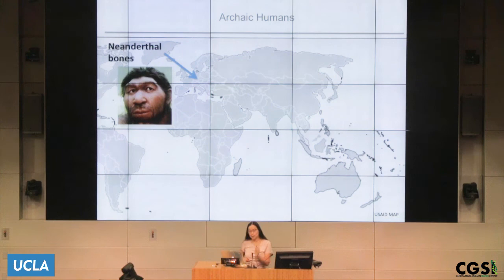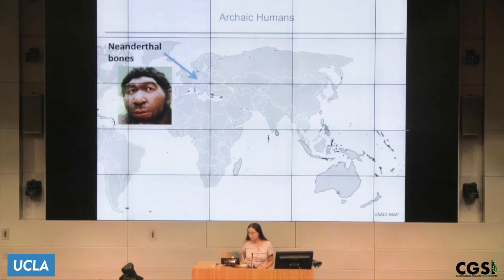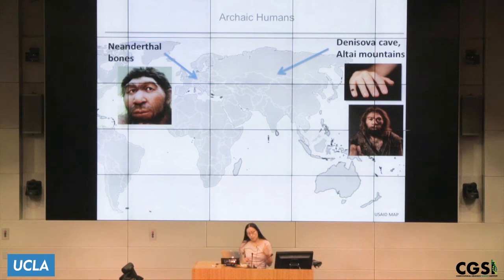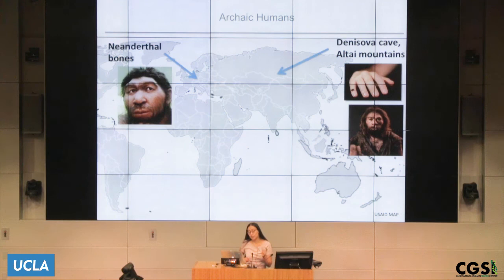The first draft of the Neanderthal genome came out in 2010, from fossil remains identified in a cave in Croatia — it was a low-coverage genome. Later, they found two bones in the Denisova cave in Siberia. They sequenced DNA from a finger bone, and that genome was quite different from the Neanderthal genome and also quite different from the modern human genome. They called that individual the Denisovan, because the bone was identified in the Denisova cave. Interestingly, there is no fossil record for that individual, but we have its whole genome.